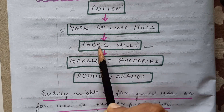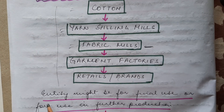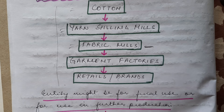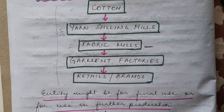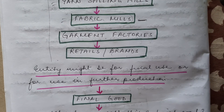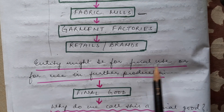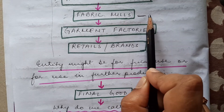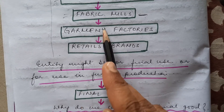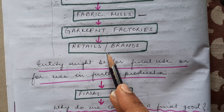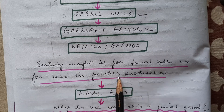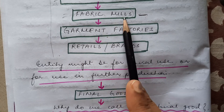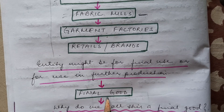Now, if you stop the production process at the fabric stage, then fabric becomes the final good. So it depends on whether an entity is used for final use or for further production — that will decide whether it is a final good or not. If I stop at fabric and use it as a final product, it is a final good; if I convert it into garments, it is an intermediate good.